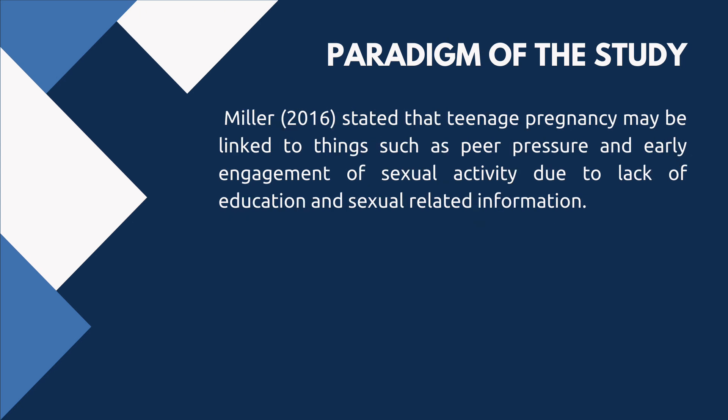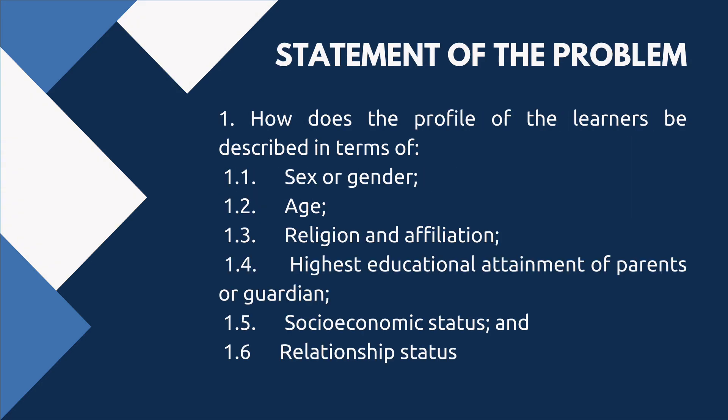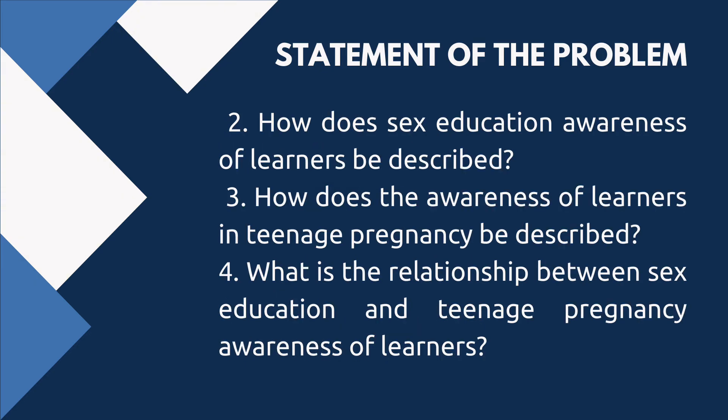Miller 2016 stated that teenage pregnancy may be linked to things such as peer pressure and early engagement of sexual activity due to lack of education and sexual-related information. Statement of the problem: How does the profile of the learners be described in terms of: 1.1 sex or gender, 1.2 age, 1.3 religion and affiliation, 1.4 highest educational attainment of parents or guardian?